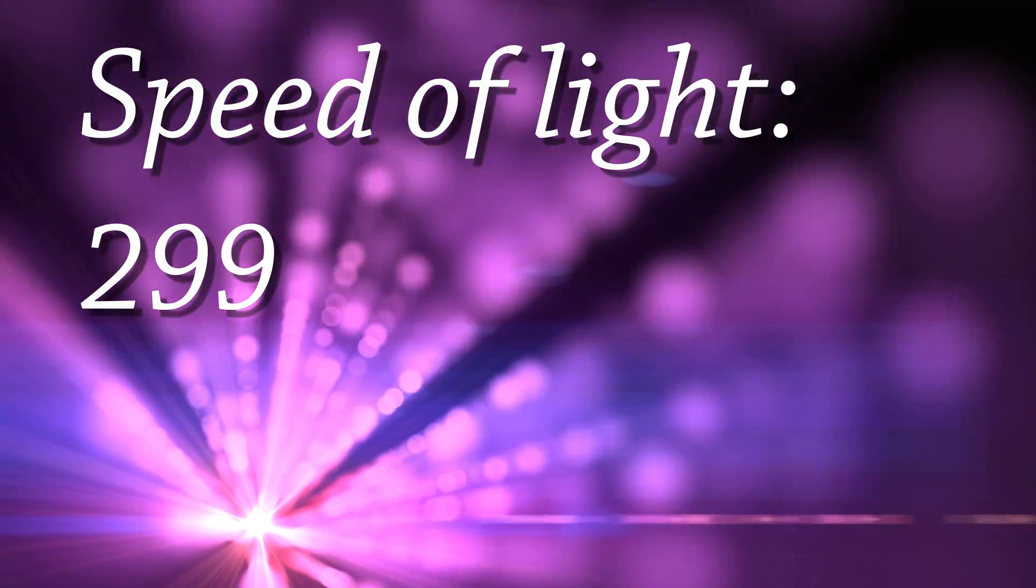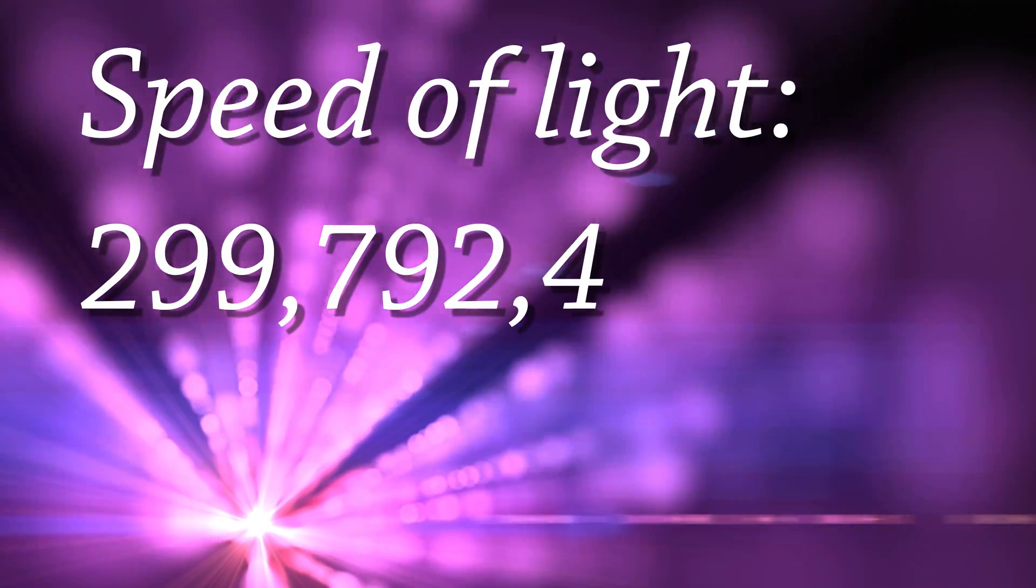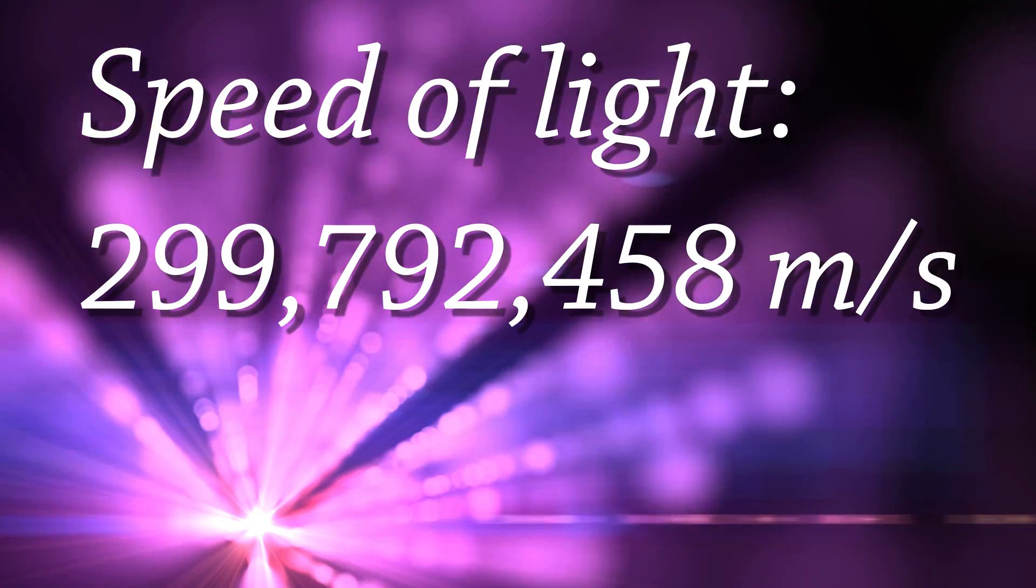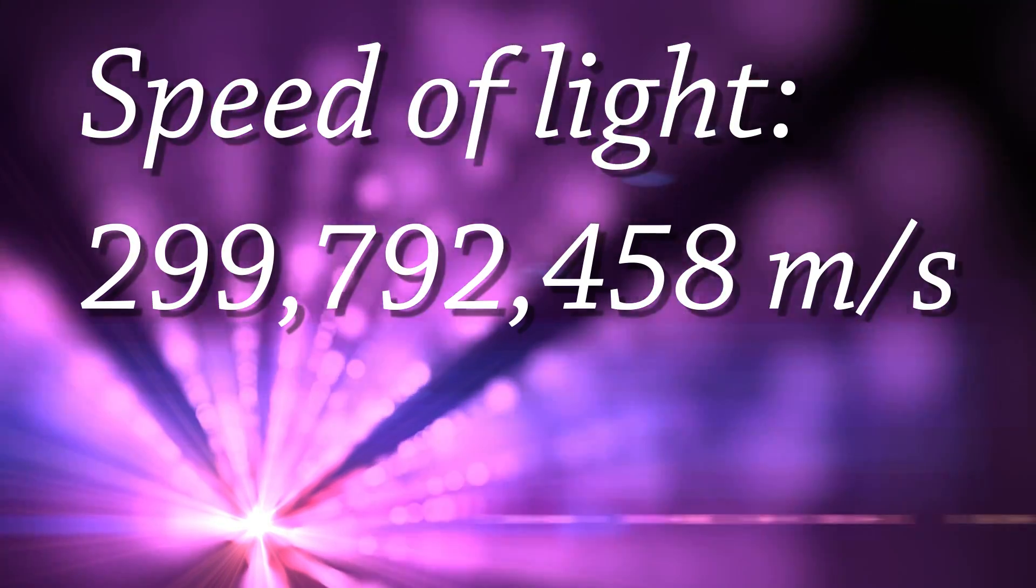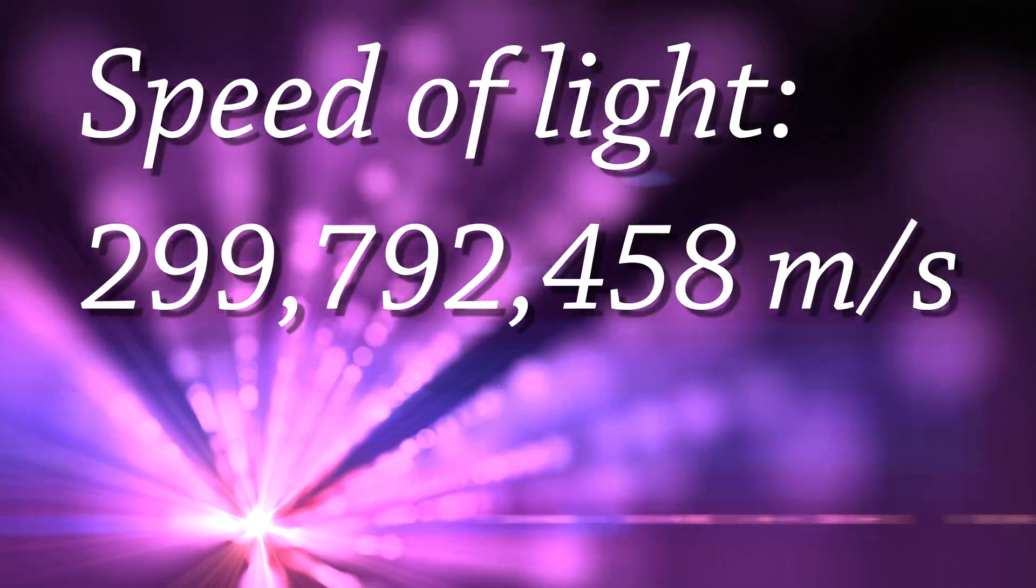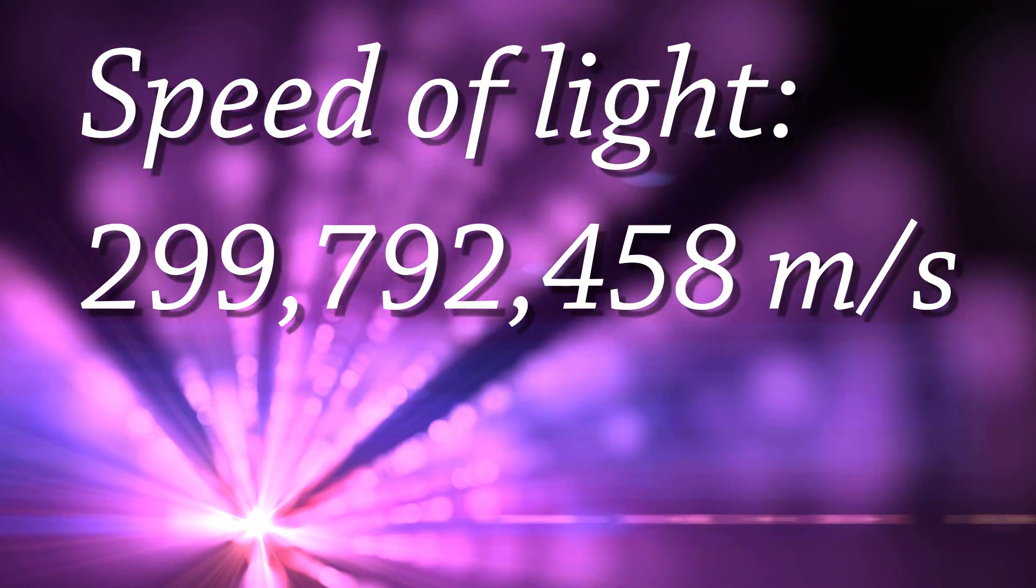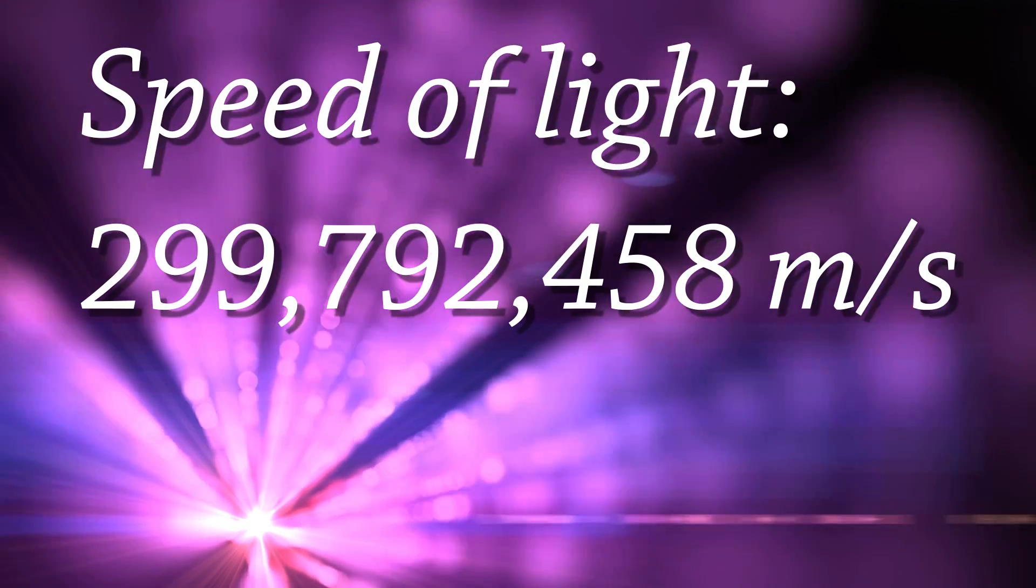The speed of light is 299,792,458 meters per second, which is a very long number to write. It takes up a lot of paper, and it takes me a long time to type it into my calculator.